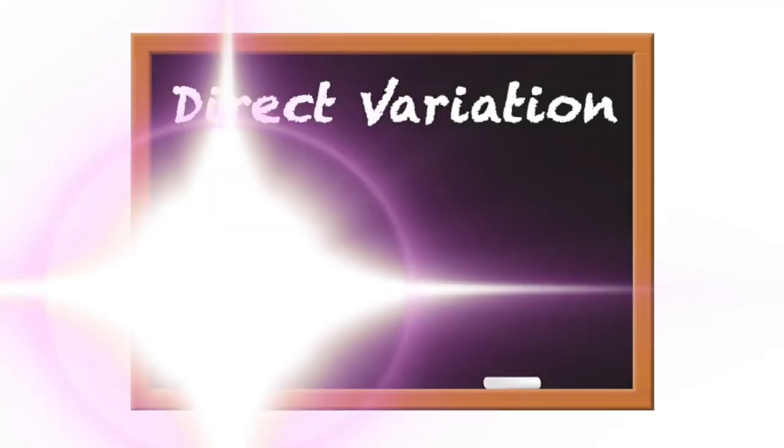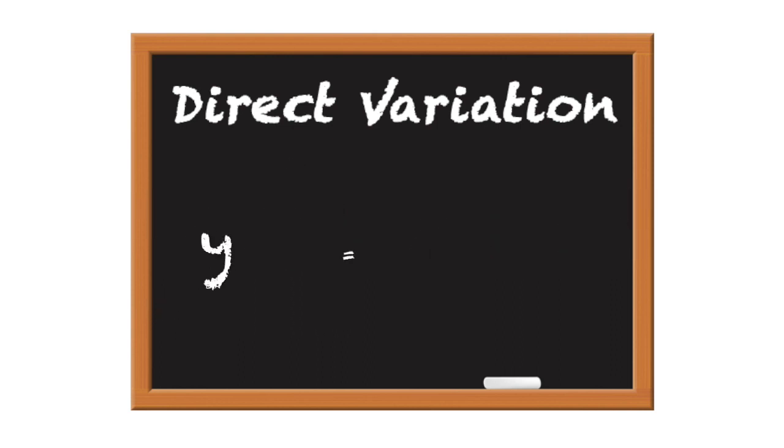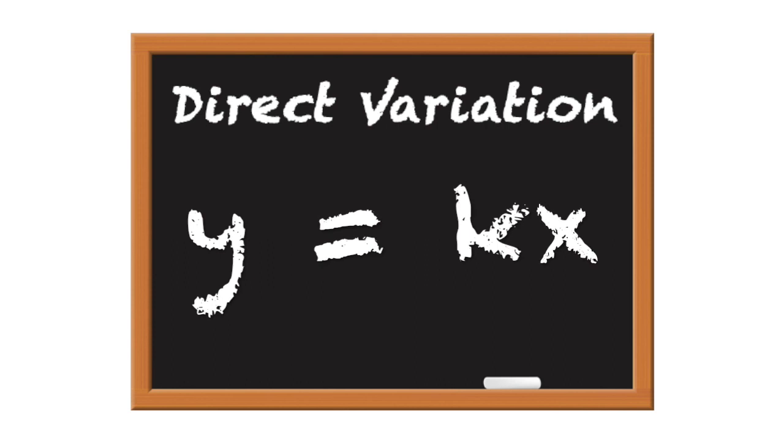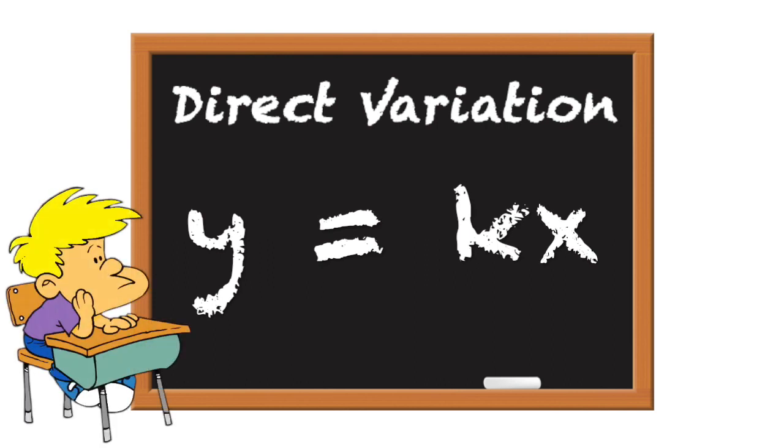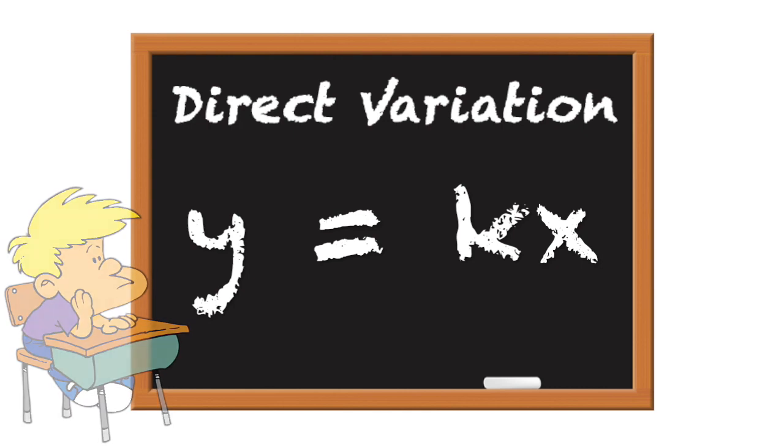Today we are discussing direct variation. Direct variation is a mathematical relationship between two different variables that can be expressed by an equation in which one variable is equal to a constant times the other. But I'll never use this in real life. That's why your mother doesn't love you.